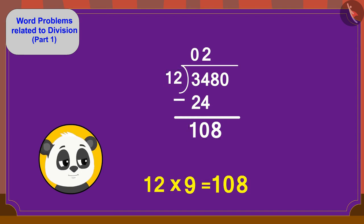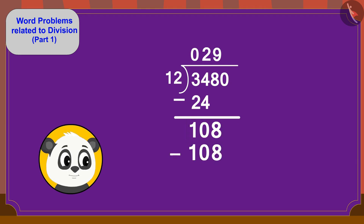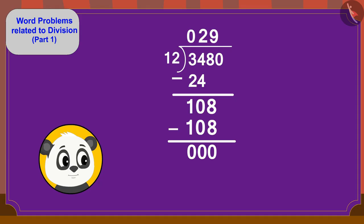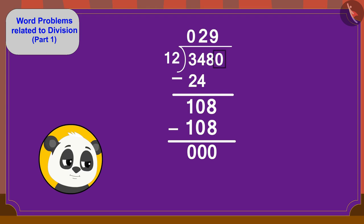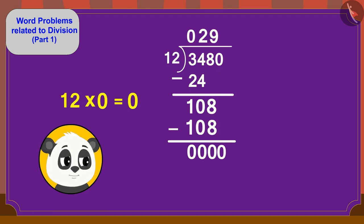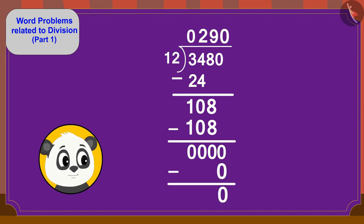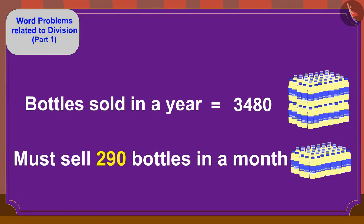Exactly! 12 times 9 is 108. So, here we will write 9 above and 108 below, and subtract to get 0. We will bring down the last digit 0. Can we divide 0 by 12? Yes! 12 times 0 is 0. So, we will write 0 above and subtract to get 0. Golu must sell 290 masala milk bottles every month.